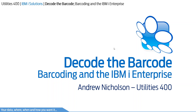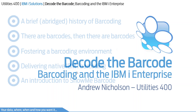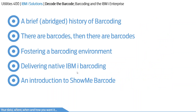We have a packed agenda for today, starting with an abridged history of barcoding. We'll move into the various types and uses of barcodes by business, then discuss the technological considerations. We're going to introduce concepts that'll allow you to deliver a native IBM i barcoding solution, before finishing off with a brief introduction on how we've completed this through our own solution called ShowMe. For contextual background, let's start with an abridged history of barcoding.